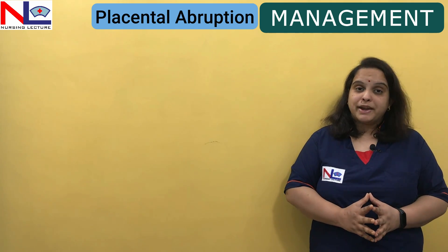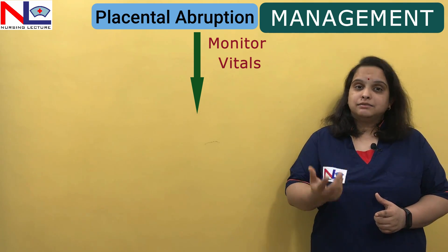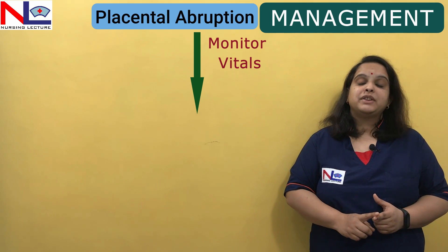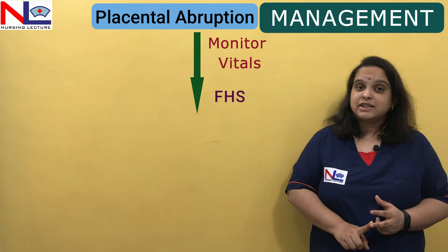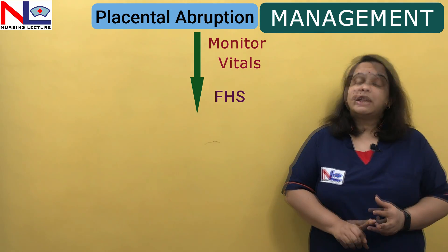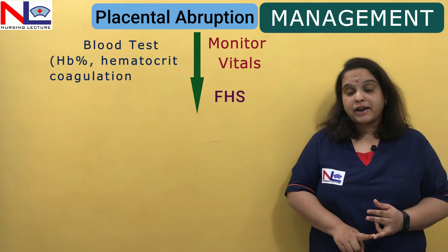Management of abruptio placenta depends on the degree of abruption, the week of gestation, and fetal status (fetal heart rate). When the woman presents, first make the patient lie down and monitor all vital signs to establish a baseline — checking BP, pulse rate, and temperature. Assess fetal heart sounds, since the greater the separation the more the fetus is compromised. Send blood for hemoglobin, hematocrit, and coagulation profile.